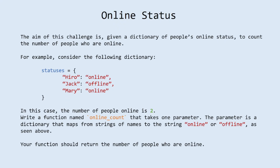Next task is online status. Explanation: the aim of this challenge is, given a dictionary of people's online status, to count the number of people who are online. For example, consider the following dictionary — in this case, the number of people online is 2. Write a function named online_count that takes one parameter. The parameter is a dictionary that maps from strings of names to the string 'online' or 'offline'. Your function should return the number of people who are online.